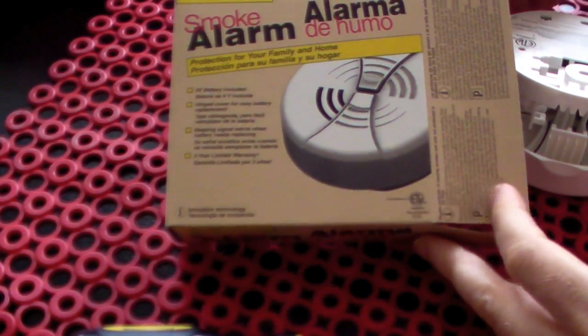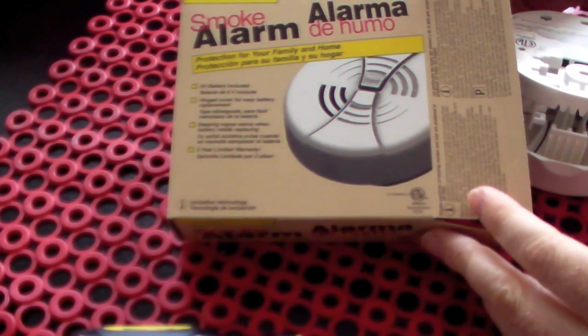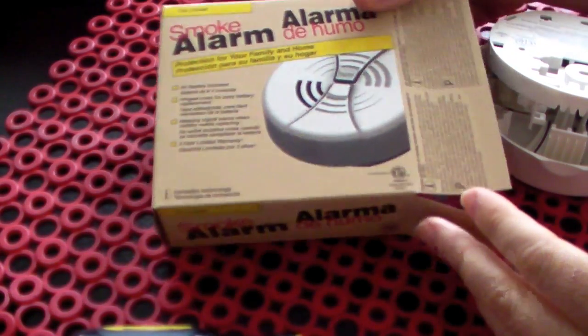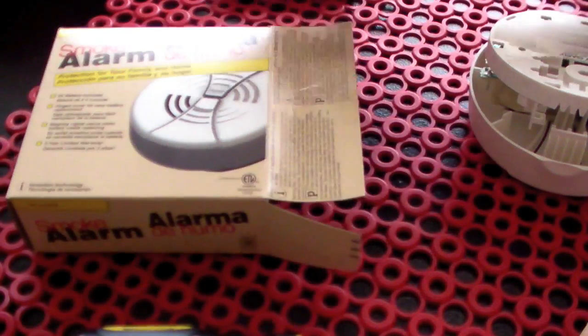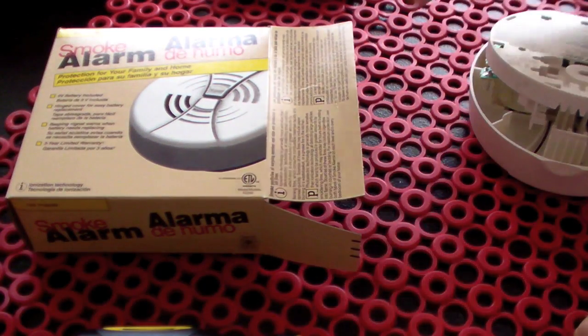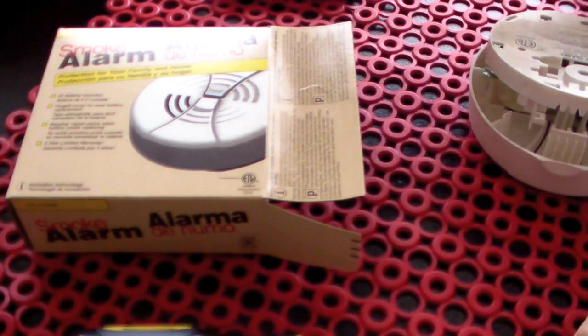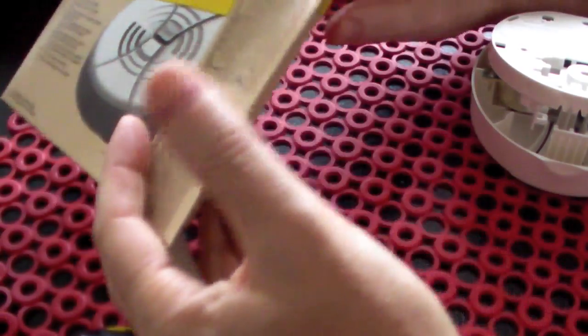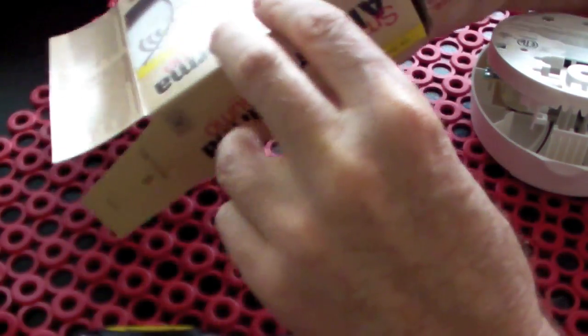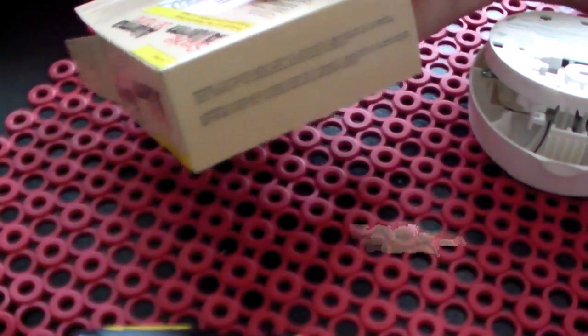This is a smoke detector I bought in a local store for $5 US. Inside is a radioactive point source, a little button of americium-241. Not all smoke detectors have it, but if you look on the side, if they do have the radioactive point source, they'll tell you. And I'm going to get that radioactive point source out of the smoke detector.